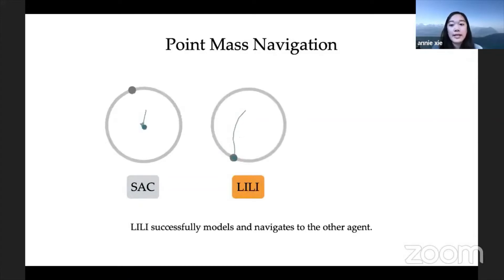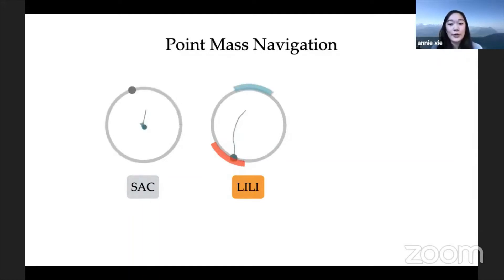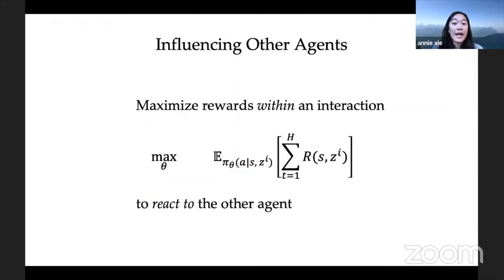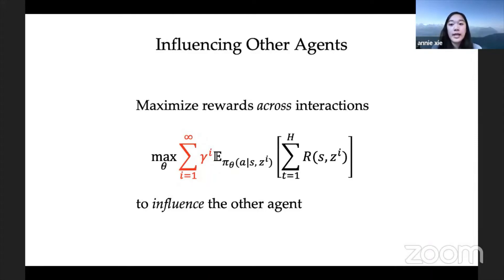In contrast, our method LILY successfully models the other agent's behavior and can capture the other agent in each interaction. But notice that the other agent is captured along the lower part of the circle. If the goal is to reach the other agent as quickly as possible, ideally the other agent should be positioned at the top of the circle where the ego agent is closest. In other words, the ego agent should influence the other agent to move towards that blue region. So instead of simply reacting to the other agent, what we actually want is to learn a policy that can influence its strategy. This influential behavior can be learned by maximizing the long-term rewards across interactions, which naturally motivates the ego agent to act in a way that leads to more desirable future strategies in the other agent.